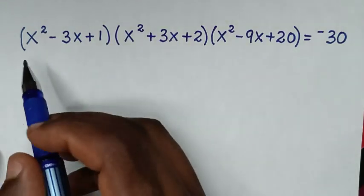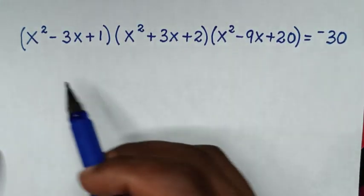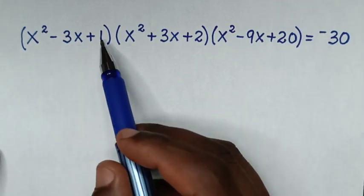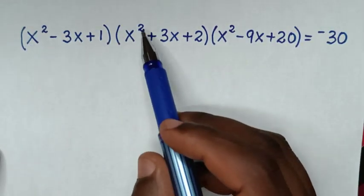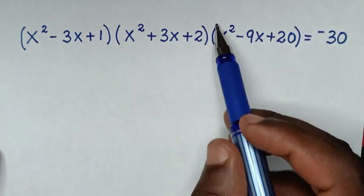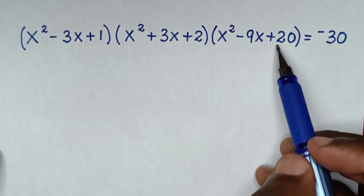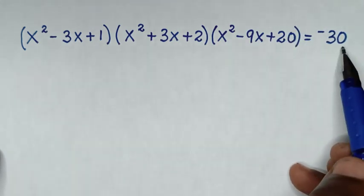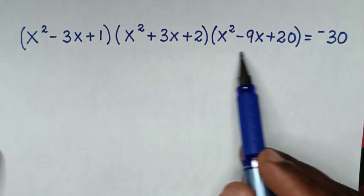Hello, you are welcome to solve this math problem: (x²-3x+1)(x²+3x+2)(x²-9x+20) = -30. Find the values of x from this equation.